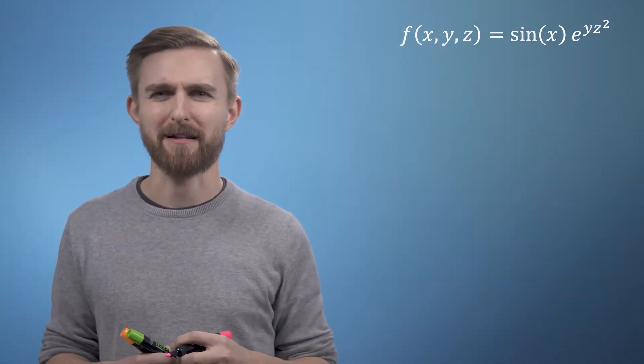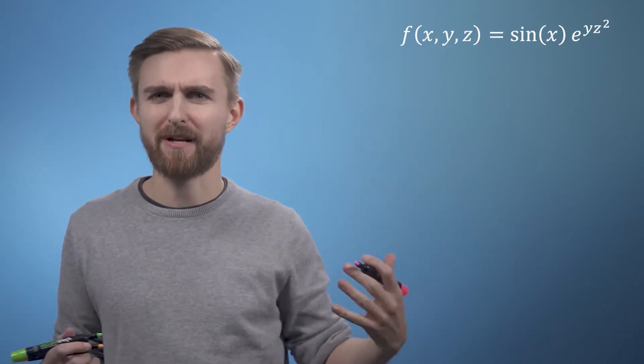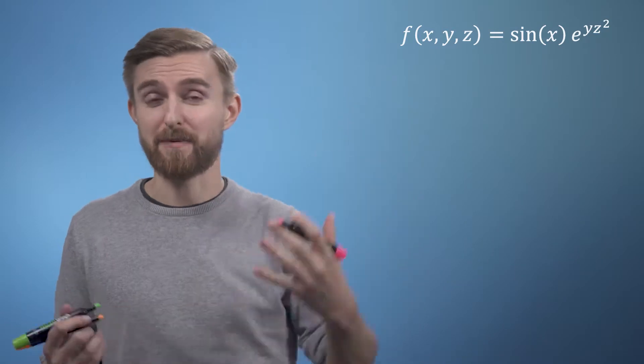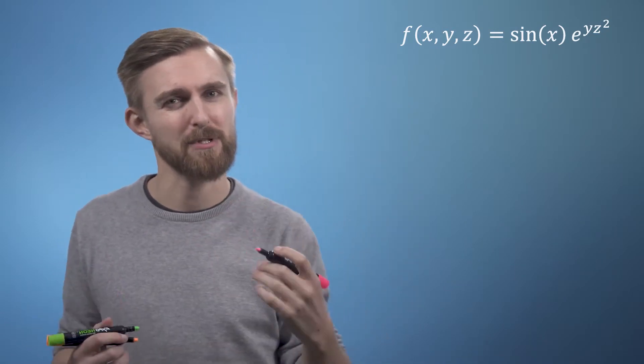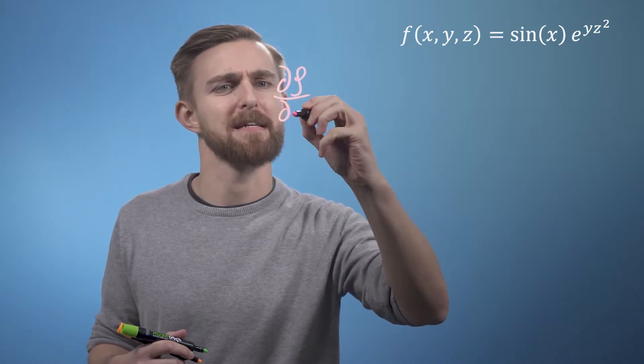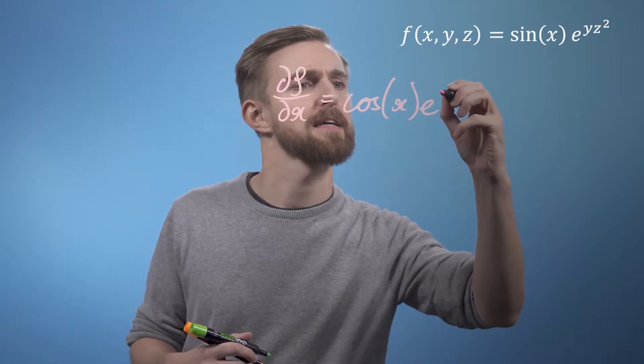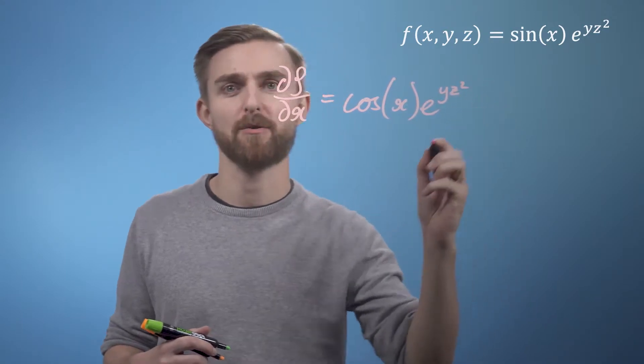So let's start with x. As the exponential term does not refer to x, we can treat it as a constant, and sine, as we saw last week, differentiates to cosine. So we can write df by dx is just going to equal cos x e to the y z squared.